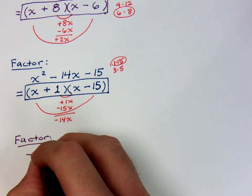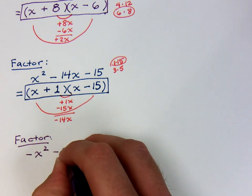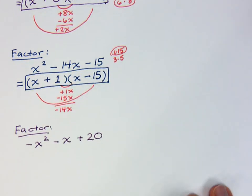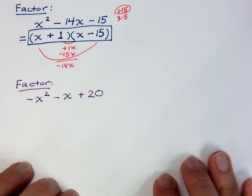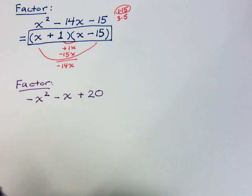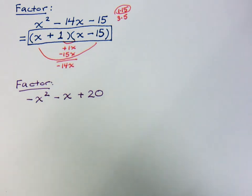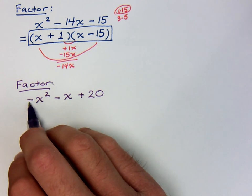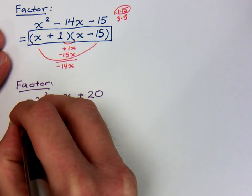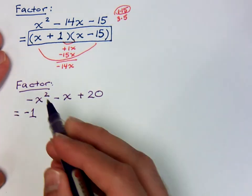How about negative x² - x + 20. What is going to happen for this guy? What's the first thing that we always do when we're factoring? That's right. The first thing is always look for the greatest common factor. Is there something that goes into all of these guys? Now at first glance you may say no. But remember what we talked about in one of our other videos. If you lead with a negative, you want to make sure you factor out that negative. So the first thing we're going to do here is factor out a negative 1.